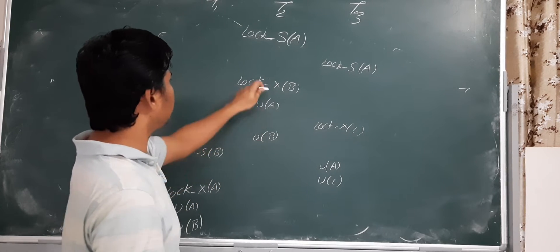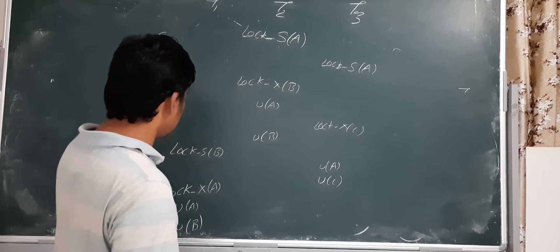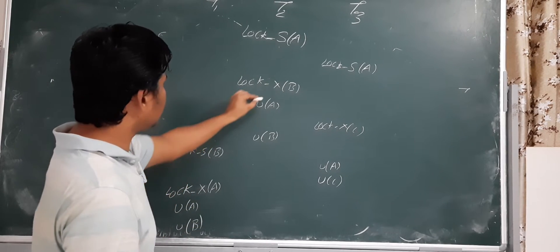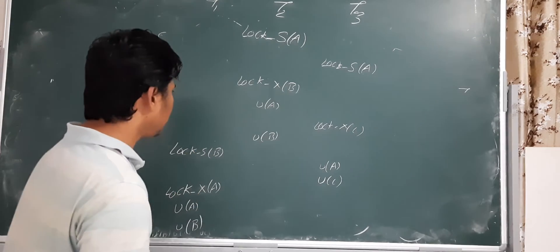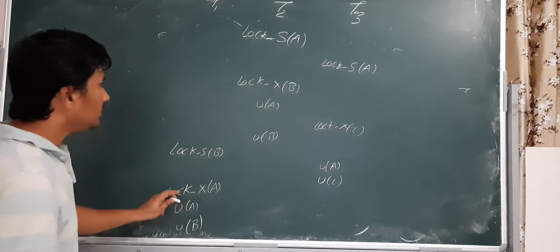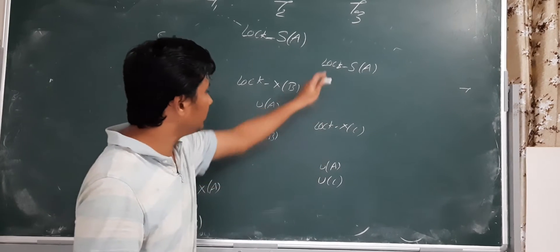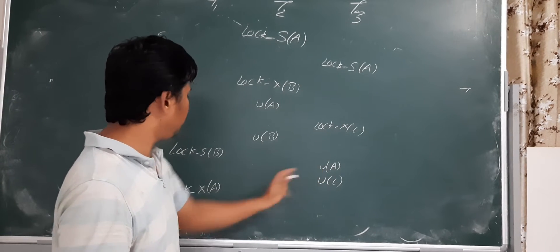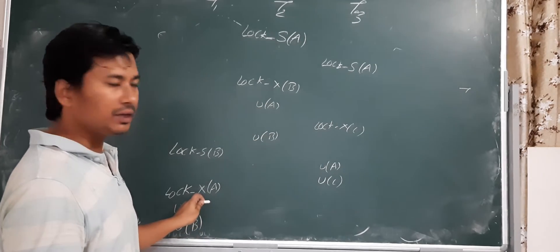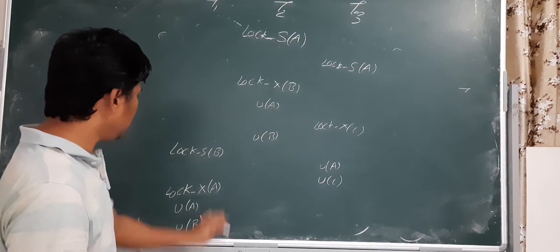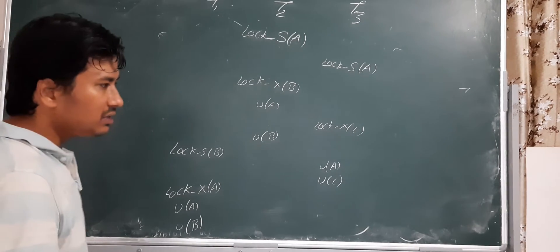T2 then unlocks B, releasing it. Since T2 has released the exclusive lock, T3 is allowed to take its shared lock and exclusive lock. This is allowed because T3 had already unlocked its shared lock before trying to take an exclusive lock. So all these operations are safe to execute.